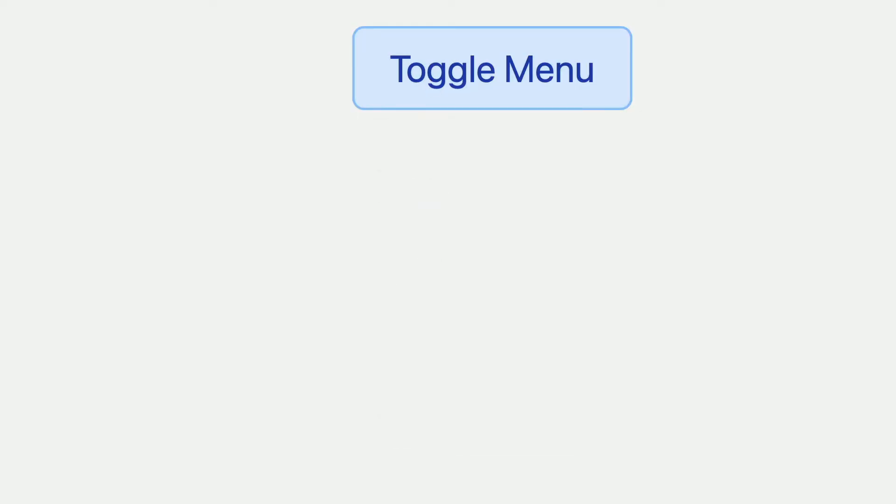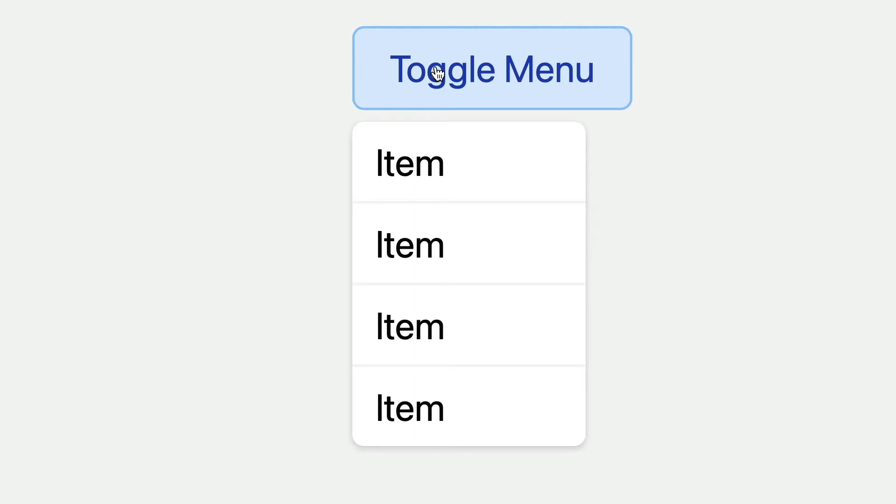I was recently building something in Imba and I had a need to create a pop-up menu. I immediately thought about all the things I'd have to account for: clicking outside the menu to dismiss it, pressing escape to dismiss it, handling the case where the menu grows too tall to fit on the screen, and the in and out transition animation.